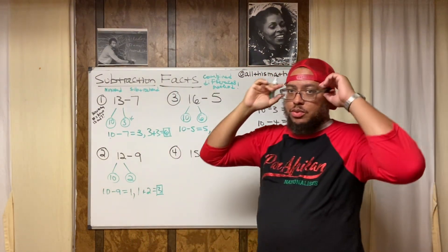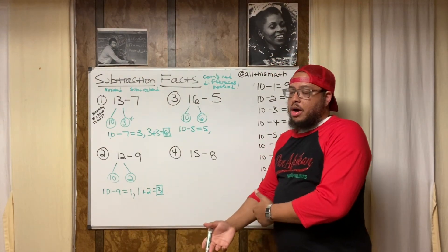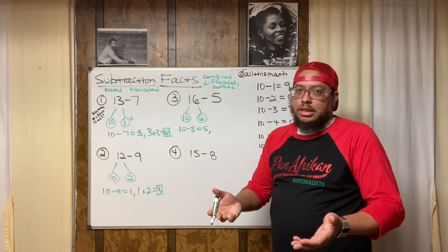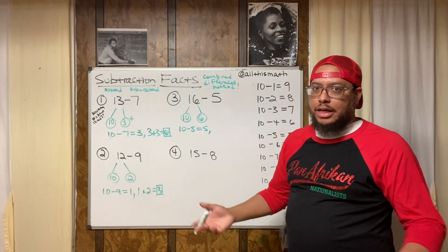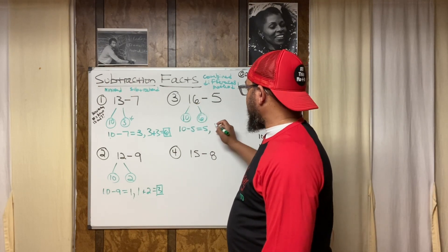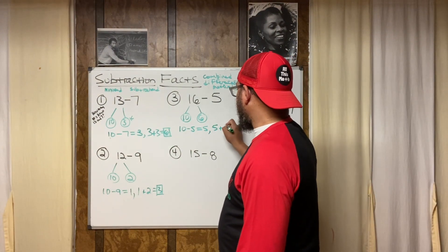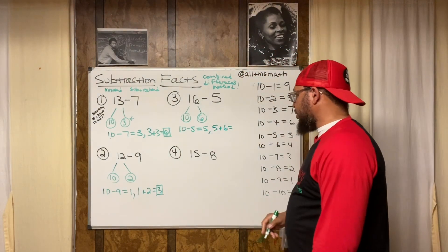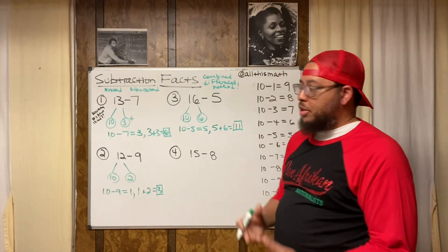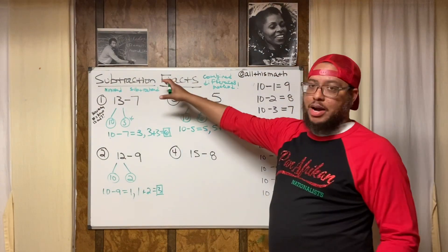We don't have to always call a method the name somebody else gave it — we can create names, like self-determination. The difference between 10 and 5 is 5, and the difference between 16 and 10 is 6. Combining the differences: 5 plus 6 equals 11. Knowing your addition facts is very helpful with this process.